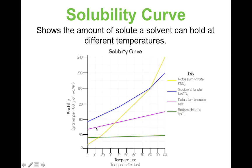One more type of question: what type of solution would sodium chlorate be if 120 grams of it are dissolved at 30 degrees Celsius? Sodium chlorate is the blue line. At 30 degrees Celsius, go up to the blue line — it can hold 100 grams, right between 80 and 120. Since we've dissolved 120 grams, that's more than it can hold, so this must be a supersaturated solution.